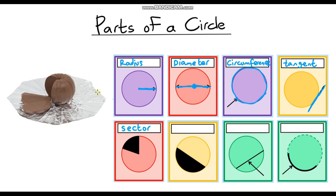This next one is one of my favourites, because it always reminds me of a Terry's Chocolate Orange. I always remember the adverts with Dawn French where she'd say 'they're not Terry's, they're mine!' Those pieces of chocolate are known as segments, and this part of the circle is exactly the same shape — it's called a segment. Just think of a segment of Terry's Chocolate Orange. The sector and the segment can be very confusing, so I always think of that to remember which is which.